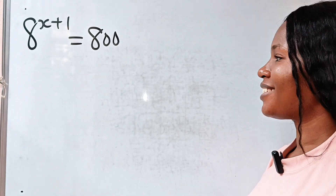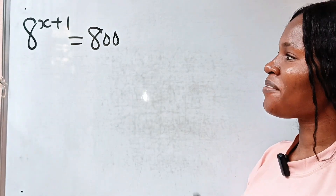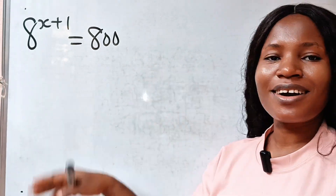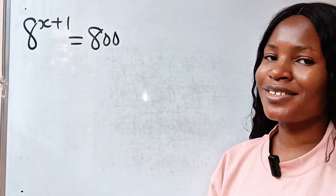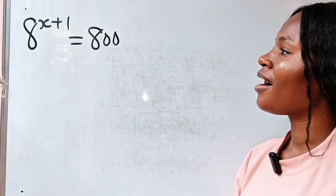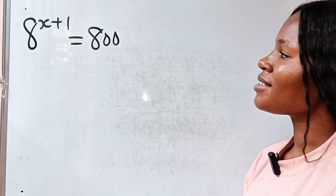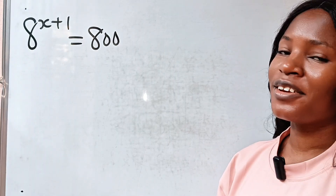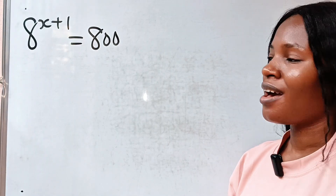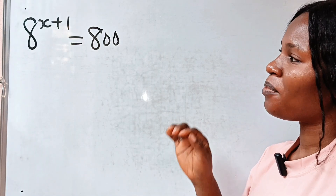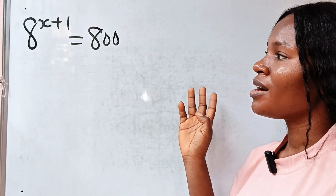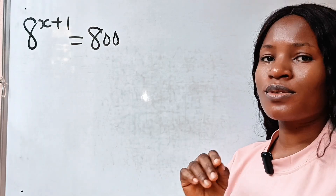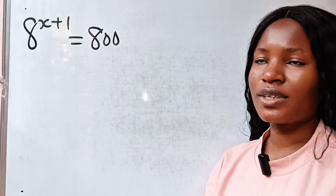Welcome back to my channel. We have a wonderful math Olympiad question to solve. Here we are asked to find the value of x if 8 to the power of x plus 1 is equal to 800.